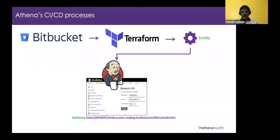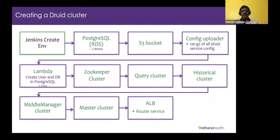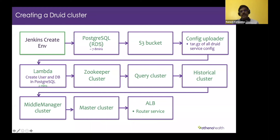Let me go into detail about what happens behind the stages. When Jenkins kicks in, we have two sets of stages: one is the prerequisites and the main Druid cluster creation. As part of the prerequisites, we create the metadata store, which is PostgreSQL, and there is an S3 bucket which is used for the deep store. These two get created first.